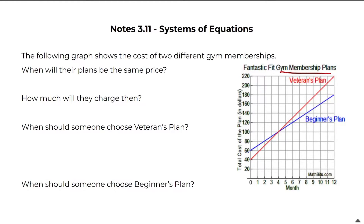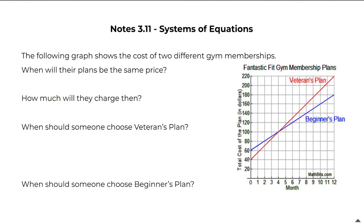We're talking about gym membership plans. The first question asks when will their plans be the same. The beginners plan follows one line and the veterans plan follows another. They have different prices each month — for example, zero months is $40 for one plan and $60 for another, 12 months is $180 versus $220. But at four months they have the same price, which is $100.